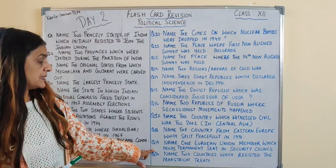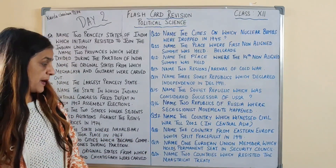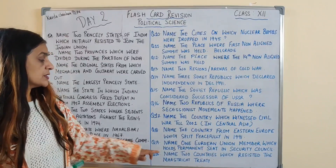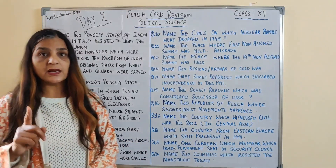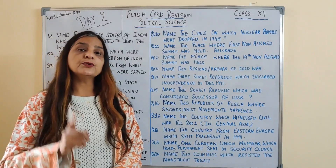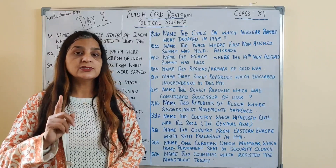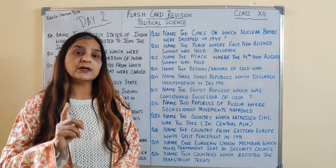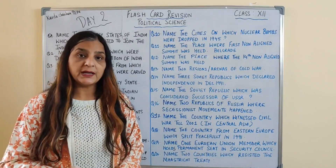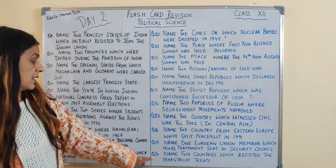Question number 19: name one European Union member which holds a permanent seat in the Security Council. European Union member kaunsi country hai jo United Nations Security Council ki permanent member hai, and the answer is France.